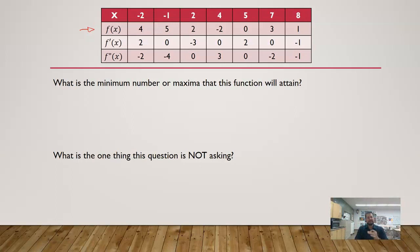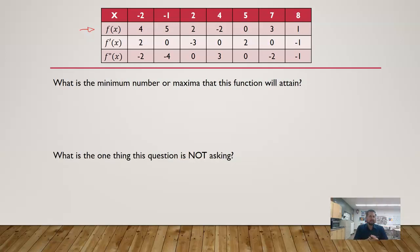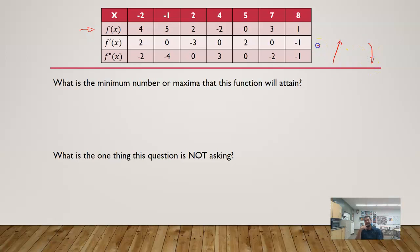So here's what we're going to look at. The first question we're going to look at is: what is the minimum number of maxima that this function will attain? Maxima is just plural for maximum. So this is saying, based on this information that I have, how many maximums — at the very least — is my function going to have? There could be a million of them because we don't know what's happening between the given x values. But one thing has to be true when we have a maximum: my function has to change from increasing to decreasing. Another way to say that is my first derivative values have to go from positive to negative. This is not asking where do I have a maximum — we cannot tell that based solely off of this table of values.